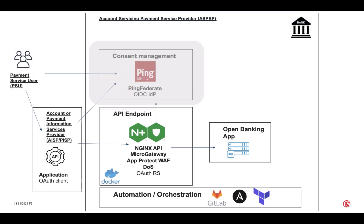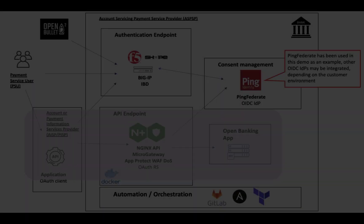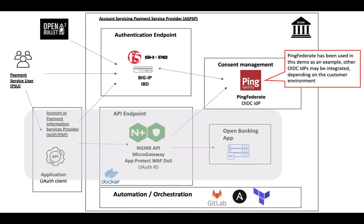So far we've explored the data plane protections F5 can offer, but there's another area where F5 can make a difference: protecting the OAuth authorization server and OIDC IdP itself against malicious bots. This server presents a login form that can be abused through credential stuffing or brute force attacks launched from bot networks, so it is important to protect against bot access.